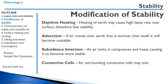The stability of air can be modified by a number of factors. First, we can have daytime heating: if the heating of the earth causes a higher lapse rate near the surface, there will be less stability. We can have advection — if the air moves over earth that is warmer than itself, it will become unstable. A subsidence inversion: as the air sinks, it will compress and heat, causing it to become more stable. And if there are convective cells, the air surrounding the convective cells may sink.